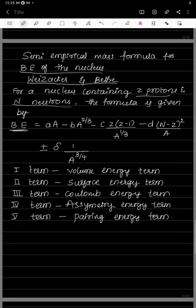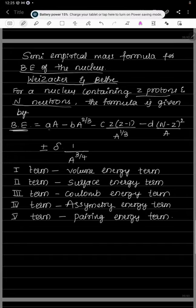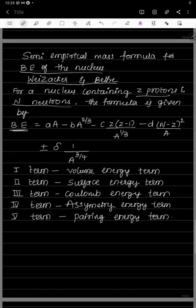The binding energy formula is: B.E. = a·A − b·A^(2/3) − c·Z(Z−1)/A^(1/3) − d·(N−Z)²/A ± δ/A^(3/4), where a, b, c, d, and δ are constants.